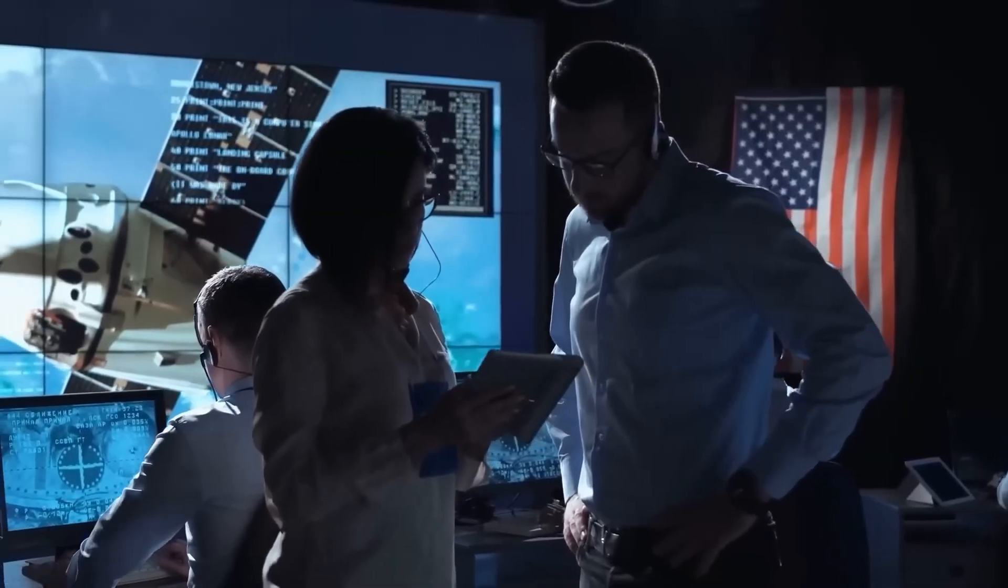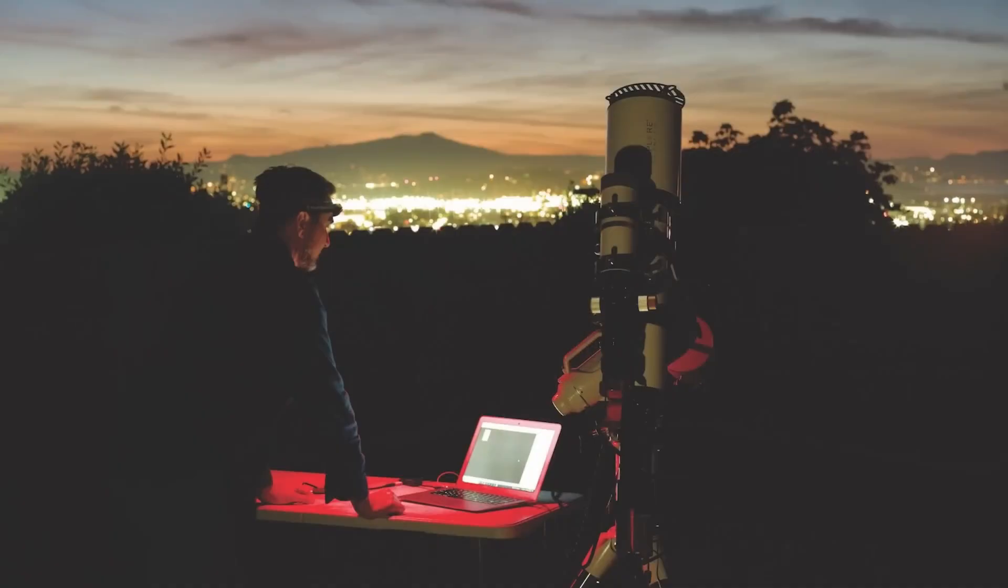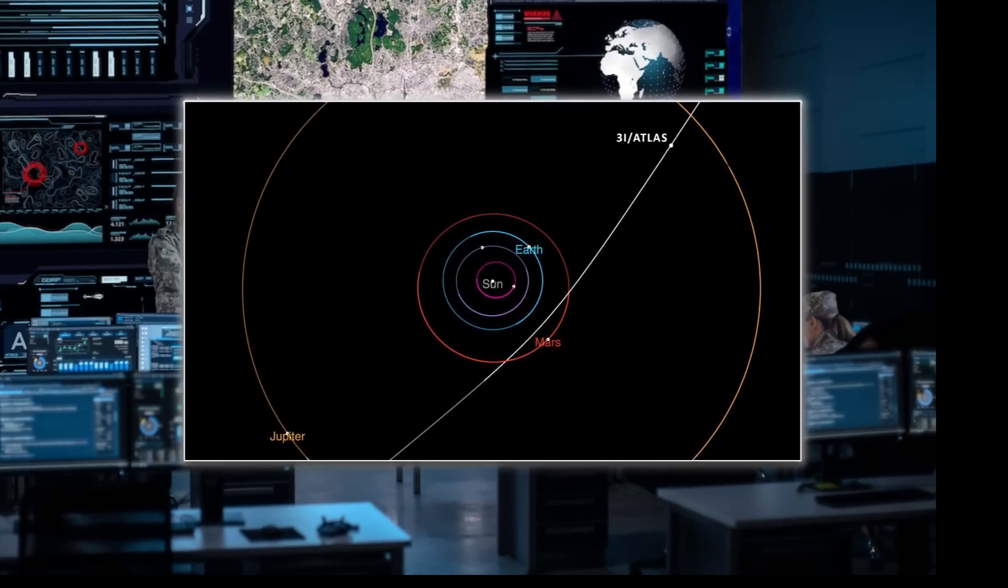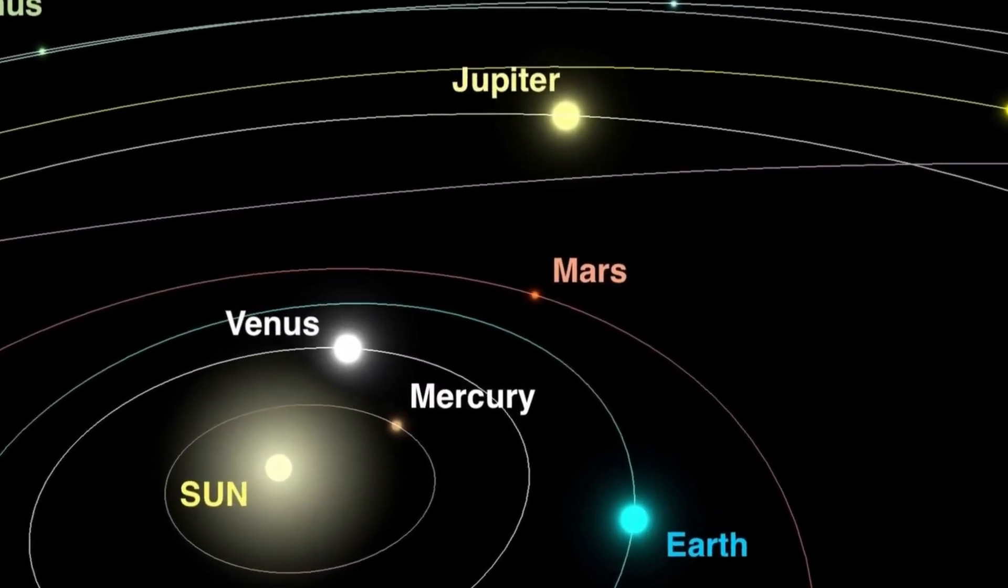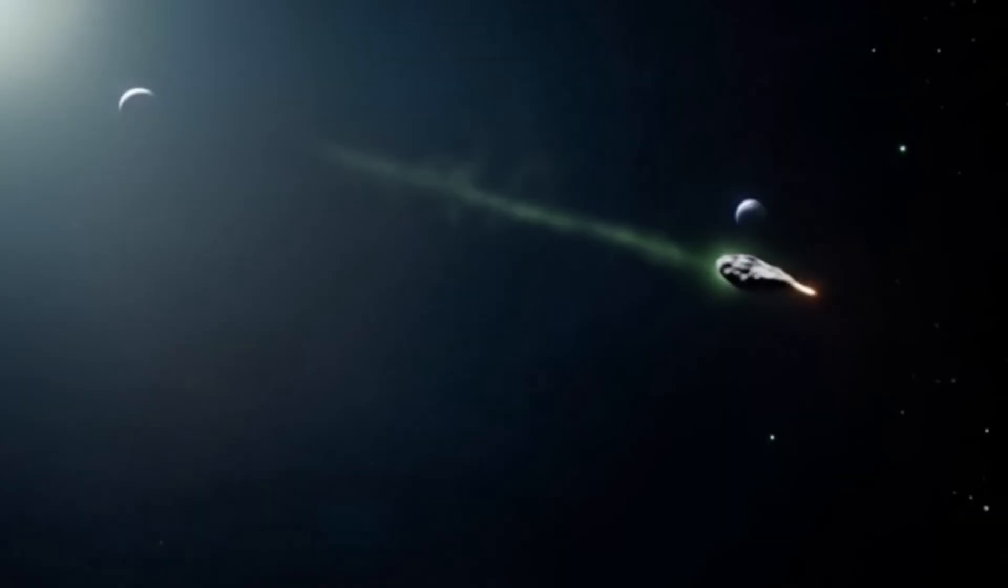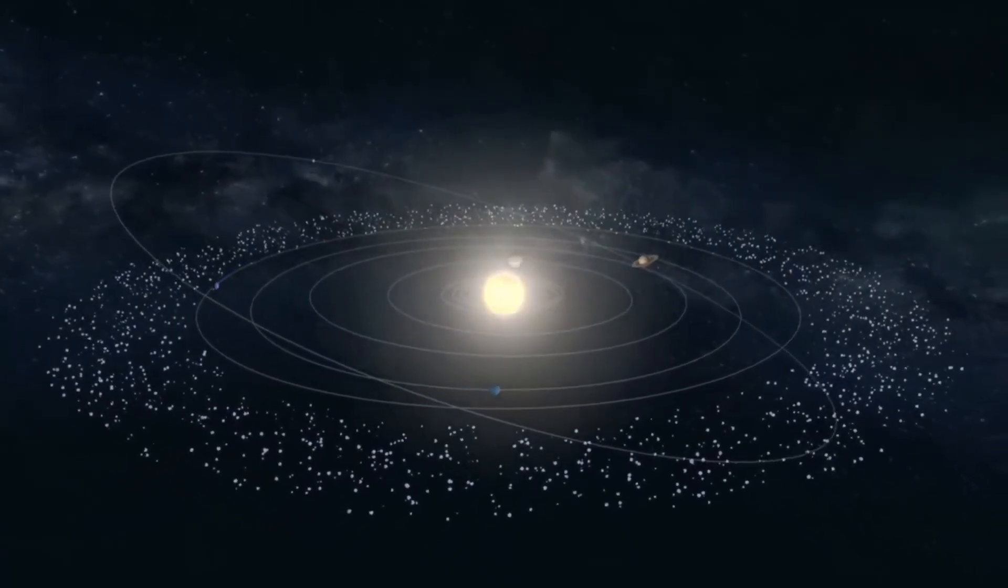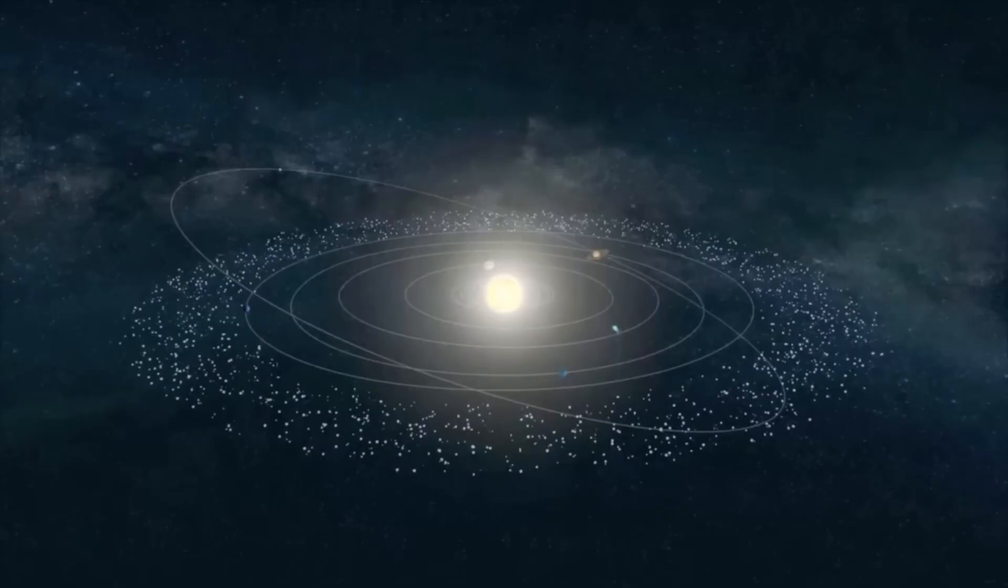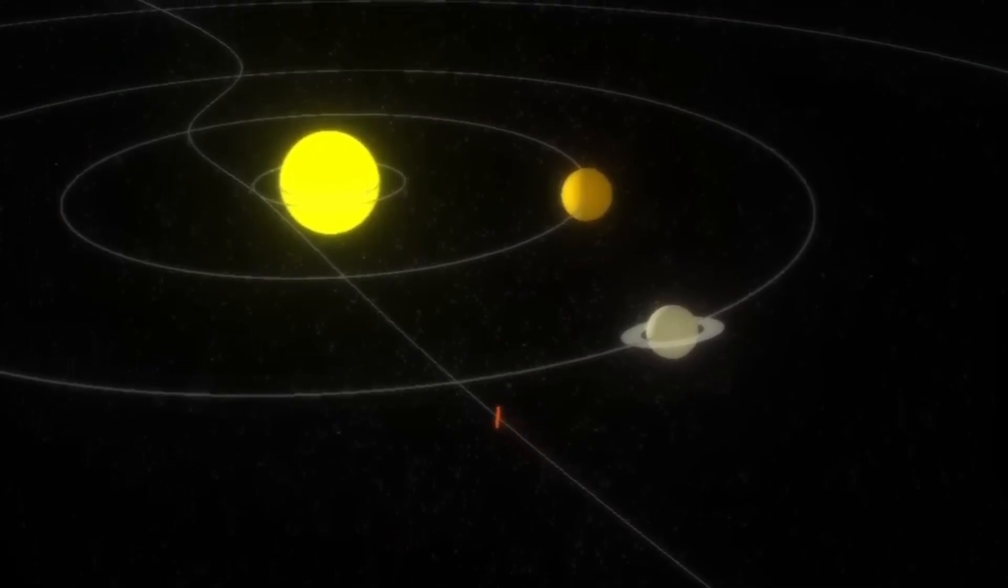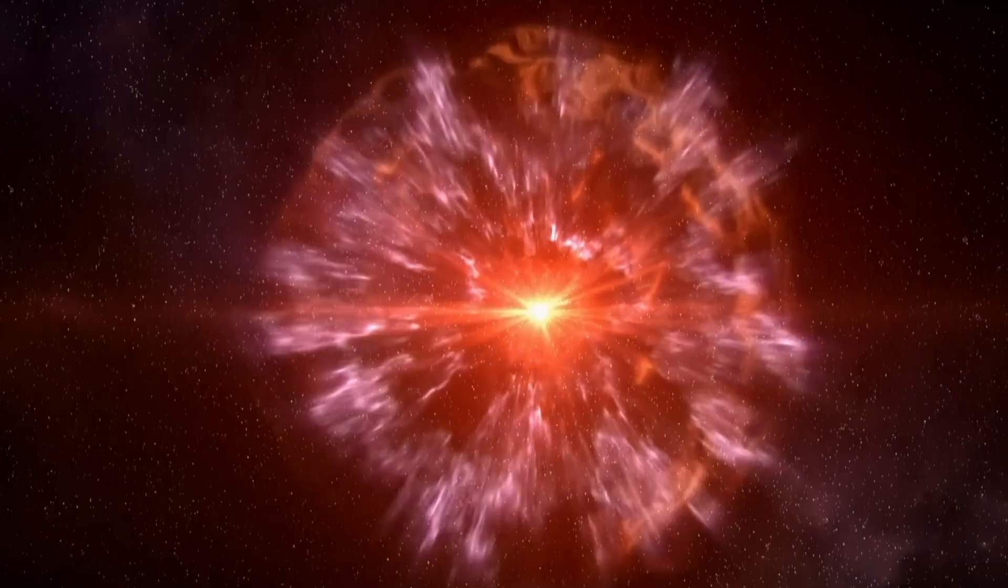The chemical analysis delivered revelations that forced astronomers to question fundamental assumptions about cosmic chemistry. On September 18, the near-infrared spectrograph detected isotopic ratios of carbon and oxygen that shouldn't exist anywhere in our galaxy. The carbon-12 to carbon-13 ratio came back at values never recorded in any stellar formation process. Dr. Elena Vazquez at the Harvard-Smithsonian Center for Astrophysics ran the isotopic data through every stellar nucleosynthesis model in the database. The ratios didn't match red giant enrichment, supernova shock processing, or even the exotic chemistry of neutron star mergers.